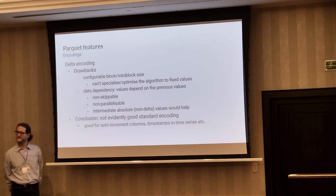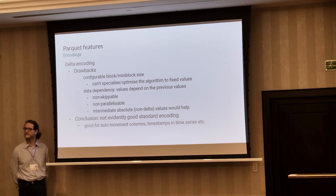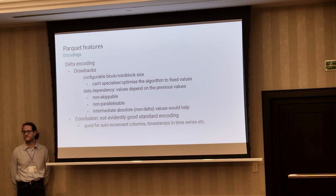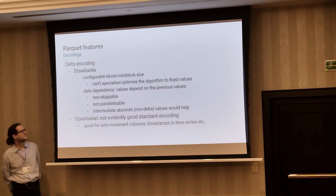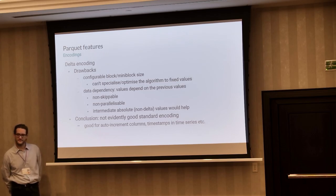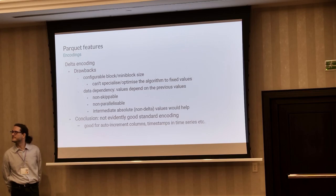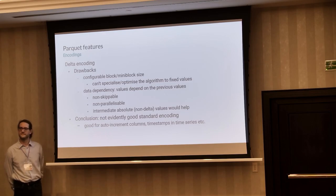Because block and mini-block sizes can be configured, we can't really optimize the algorithm for just a couple of fixed values — we have to be general. The other, maybe more serious problem, is data dependency: each value depends on all of the values that come before it. So we can't say we want to skip the next 50 values, and it's not really possible to parallelize writing or reading these. If we had some absolute values in between the deltas — for example, every 100th value being a non-delta value — then these things would become possible. In conclusion, using delta encoding as a default for all integers is probably not a good idea.